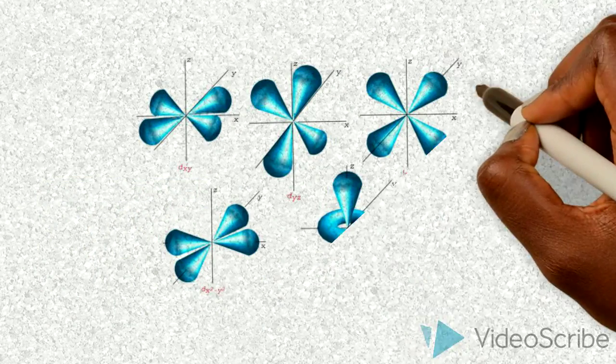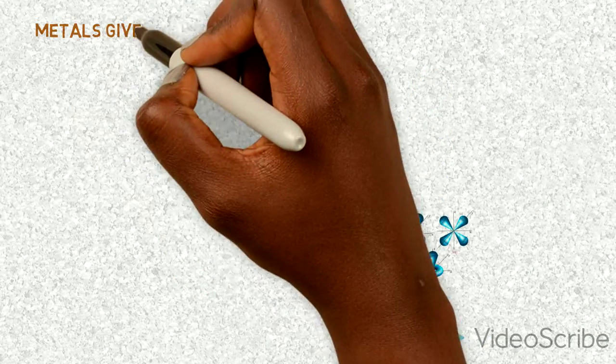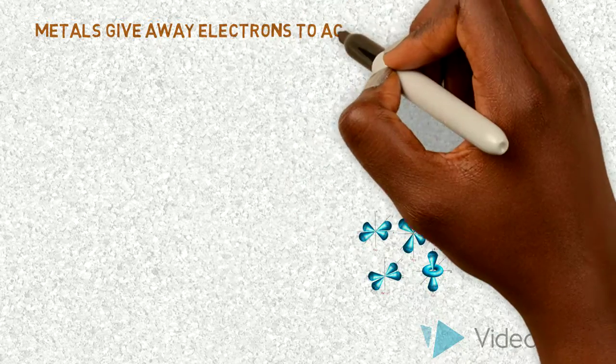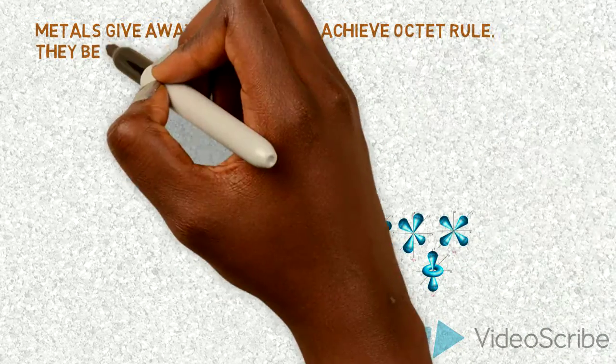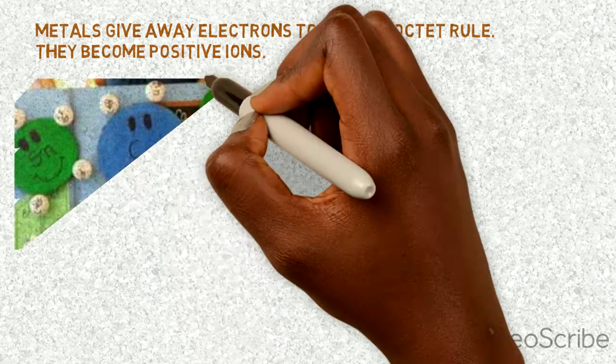Because there are large amounts of unpaired electrons in the d orbital, it would be easier for the metal atom to give away valence electrons than to gain valence electrons to achieve the octet rule.